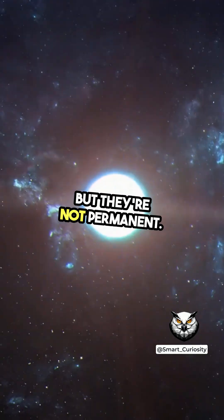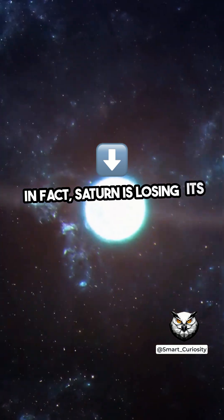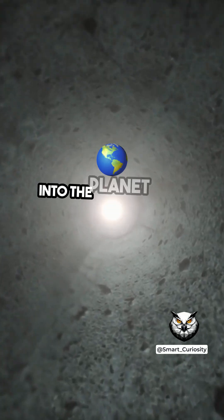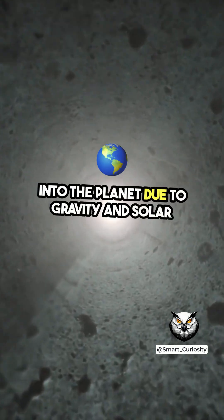But they're not permanent. In fact, Saturn is losing its rings, slowly raining down into the planet due to gravity and solar radiation.